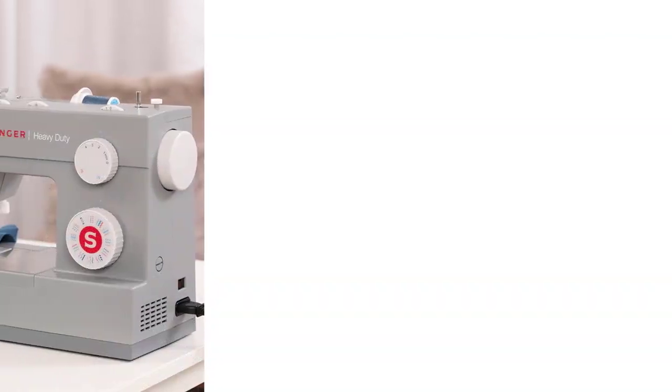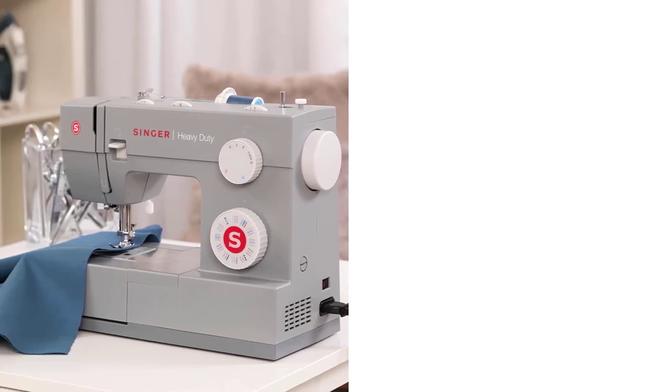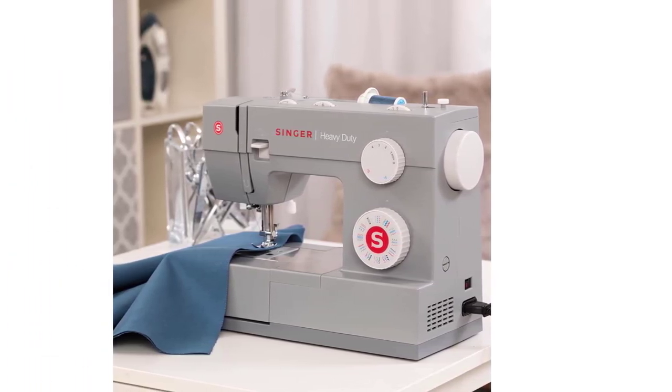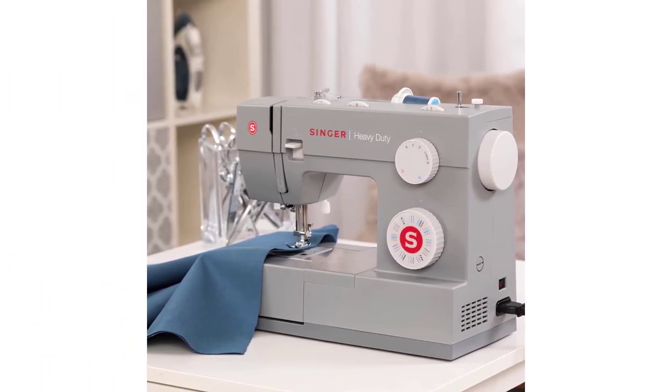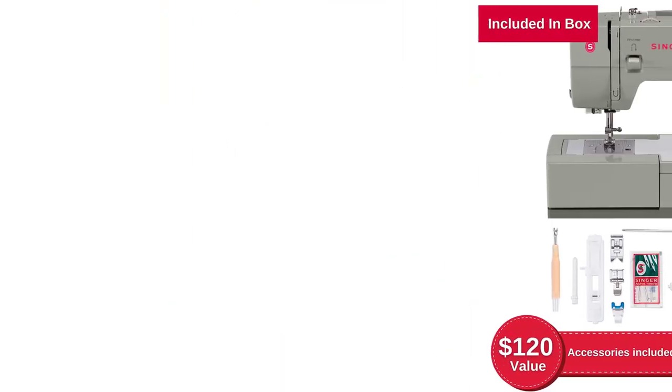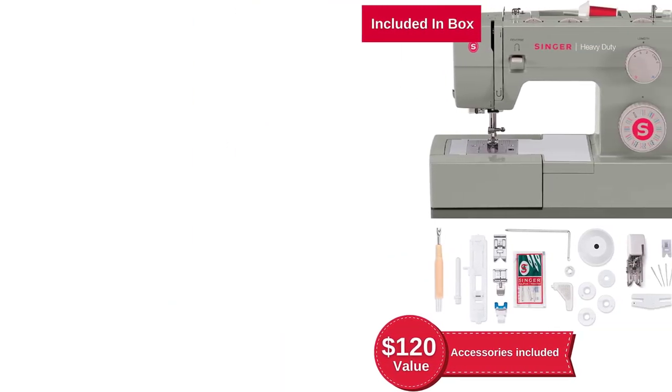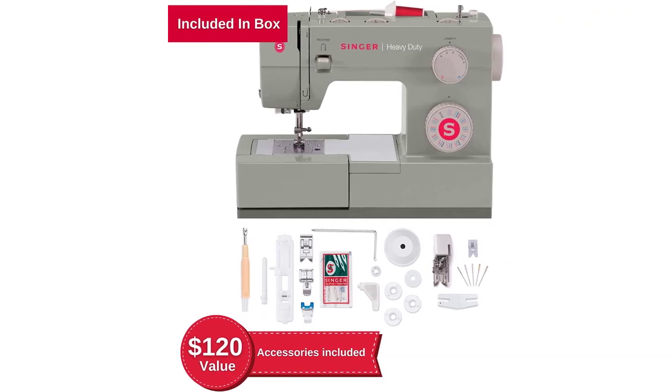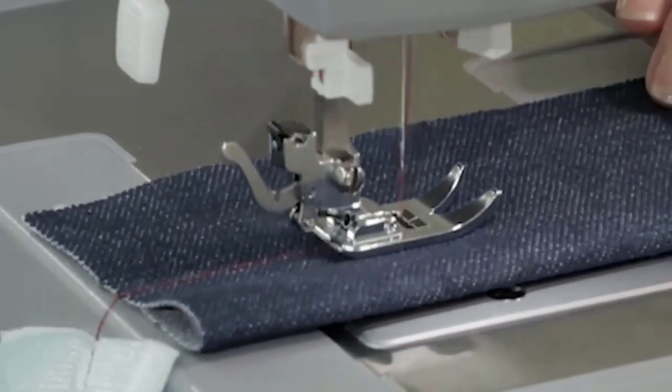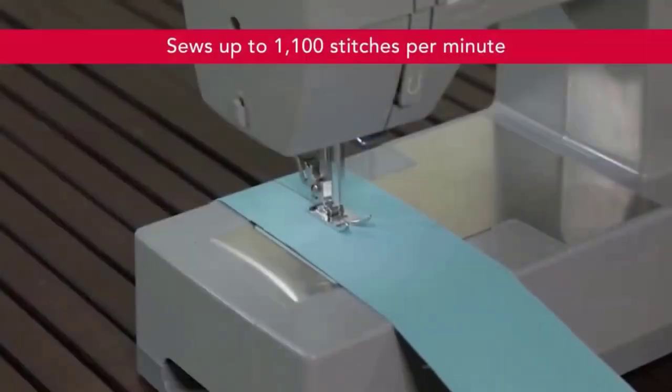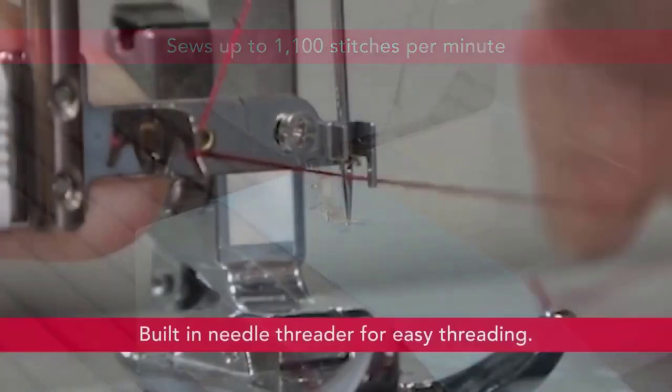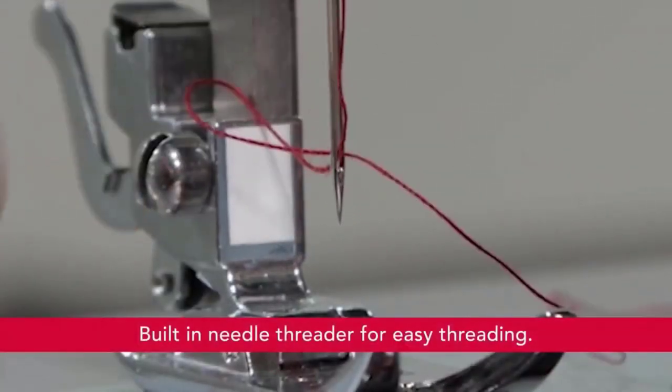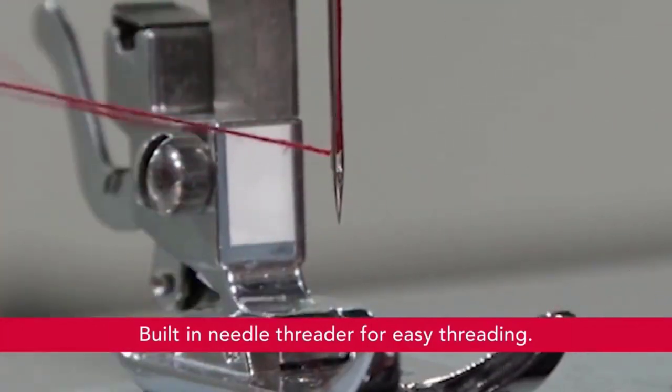This multipurpose sewing machine comes with preloaded 110 stitch applications, which you can apply for crafting, sewing, repair, and mending. With a high sewing speed of 1100 stitches per minute, you will be able to achieve great efficiency and can make more products within less time. Say goodbye to the needling hassle once you have this unit on the sewing desk. Within a few seconds, you will automatically thread the needle. No eye straining stuff whatsoever.